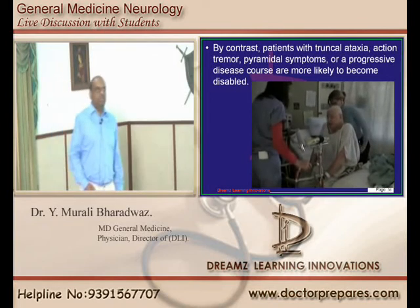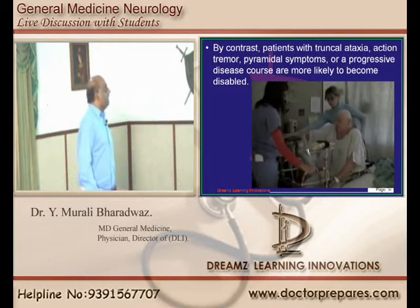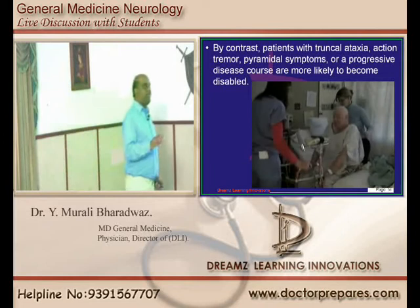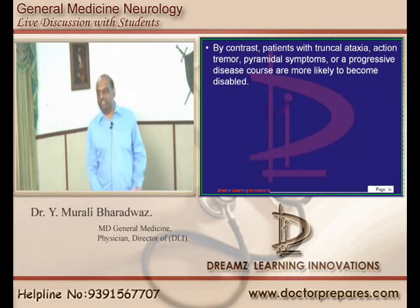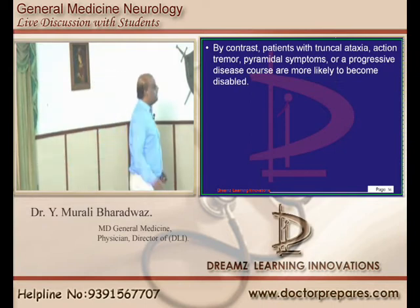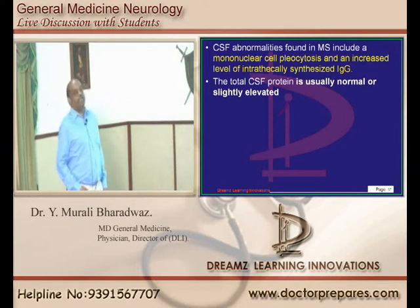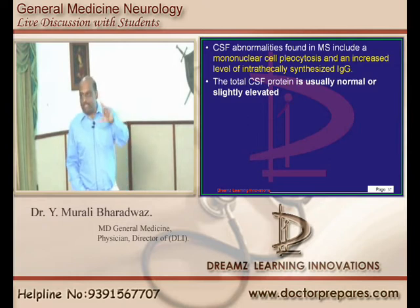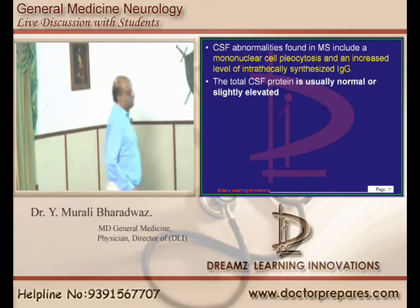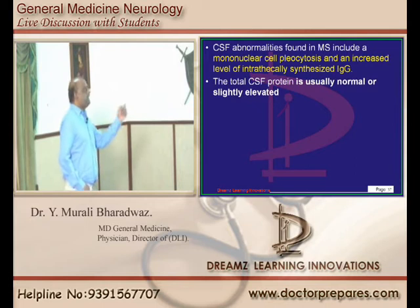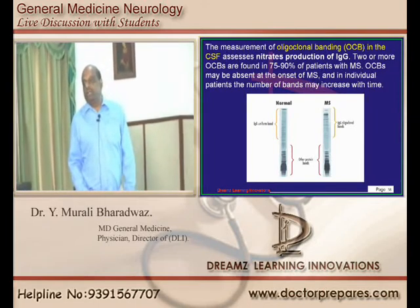A progressive disease course — whether relapsing-progressive or primarily progressive — is also a bad prognostic sign. CSF findings such as mononuclear cell pleocytosis or increased IgG levels are also important abnormalities. We measure oligoclonal banding in the CSF, and increased production of IgG oligoclonal bands is an important feature of multiple sclerosis.